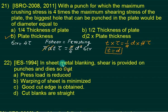In the sheet metal blanking process, shear is provided on punches and dies to reduce the required punching force.